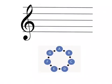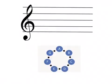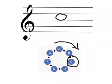Moving on, you will see that the next letter we have is B. B sits on the middle line of the treble clef staff. The next letter following our pattern is C. C sits on the third space in the treble clef staff.